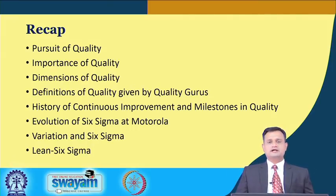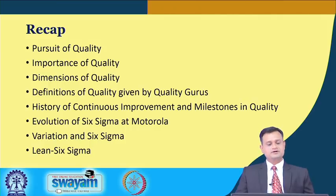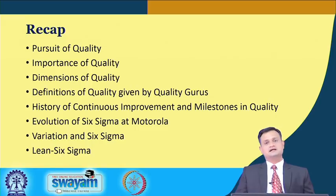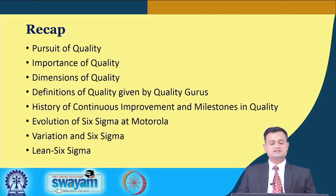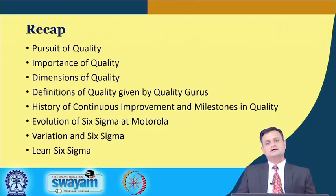There are various dimensions of quality and we cannot say that quality is only a unidimensional perspective — it is a multidimensional, multi-attribute perspective. We have talked about various perspectives of quality like reliability, safety, aesthetics, and many others in the previous lecture. We have also seen the various definitions offered by quality gurus — renowned personalities like Crosby, Deming, Juran, Ishikawa, and many more.